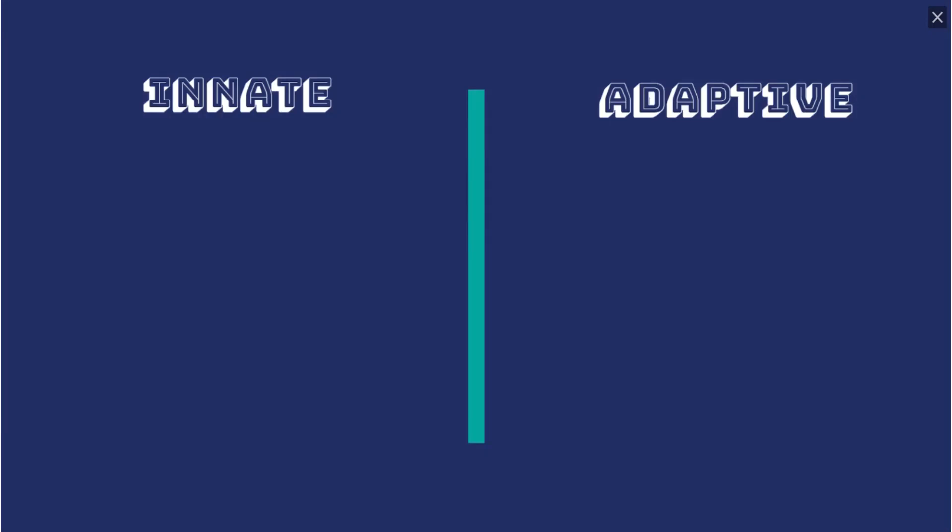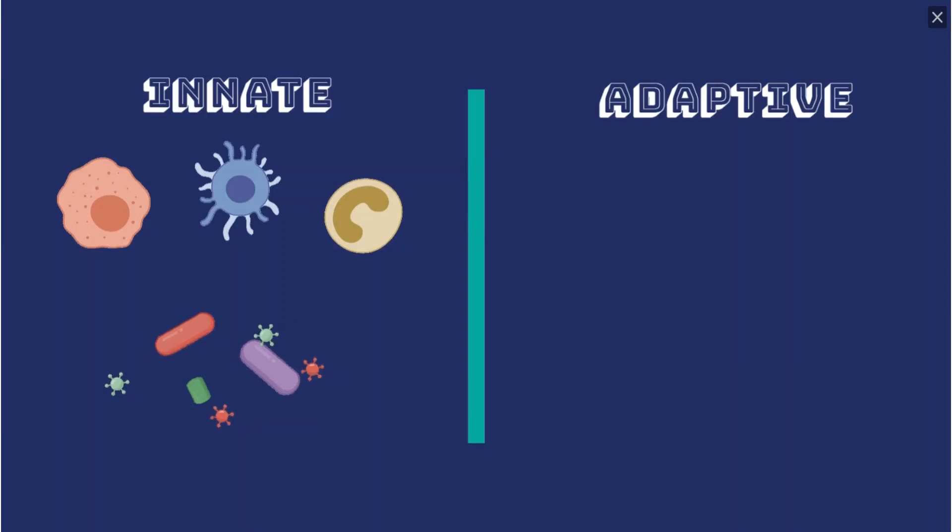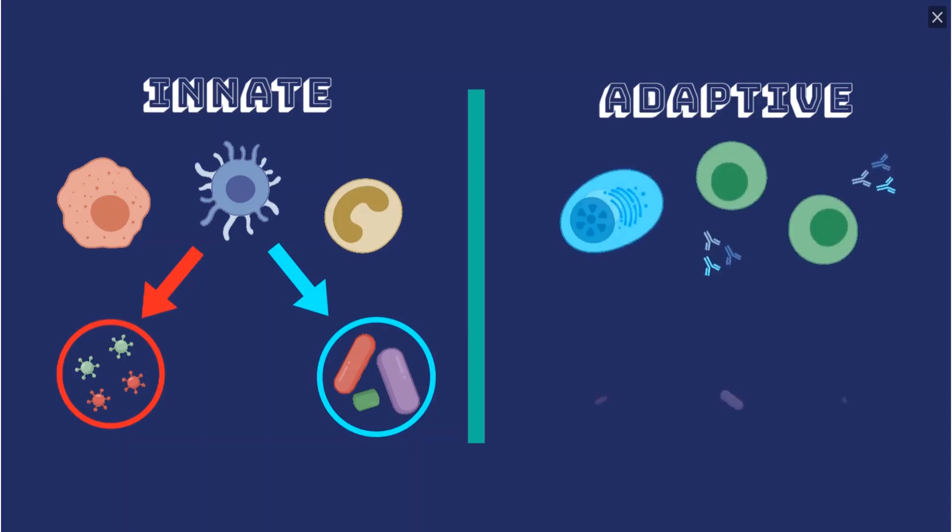Our channel has already explored the innate immune system, and how this first line of defense rapidly identifies and separates pathogens into broad groups, before targeting them. In this video, we'll be looking at the adaptive immune system, how it recognizes the specific pathogens that we are fighting, and how it protects us, both now and from future infections.